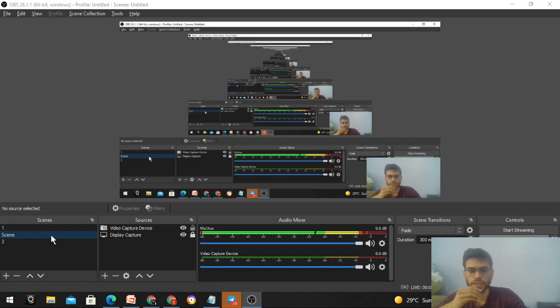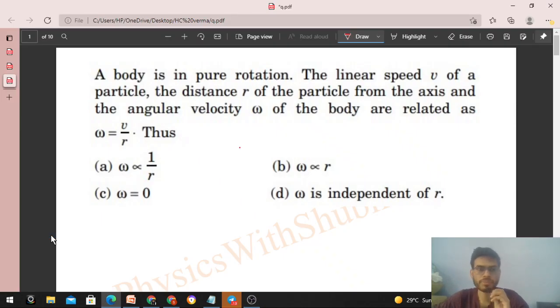Okay, hi everyone. Today let's discuss this interesting problem. It says a body is in pure rotation. The linear speed v of a particle, the distance r of the particle from the axis, and the angular velocity of the body are related as omega equals v by r. Thus, we need to comment on omega.